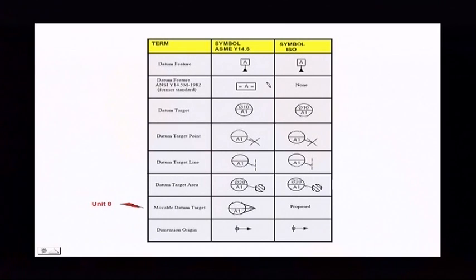Now here's our datum feature symbols, and there's nothing changed there. This here is our current symbol that we have. We're still using that for the 2009 standard, just like we did for 1994. This is an earlier one - that's for 1982. And going down all of our datum target symbols, everything else.